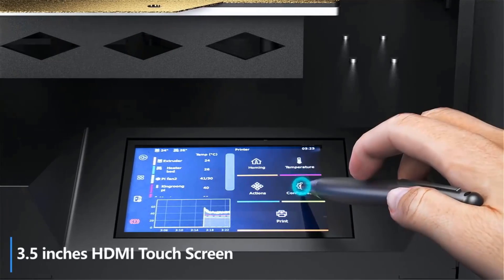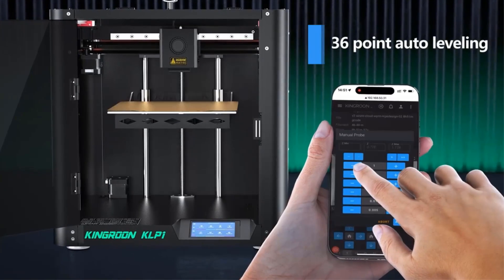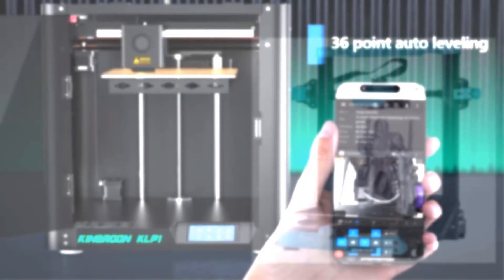With the internet connection, any screen can be your printer screen. You can control Kingroon KLP-1 anyhow, anytime and anywhere.